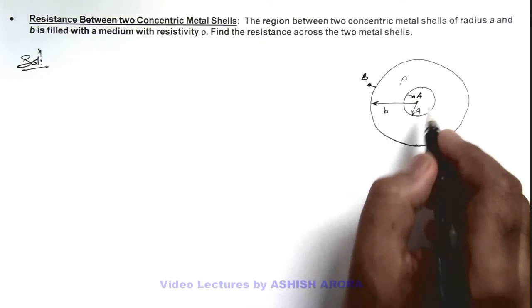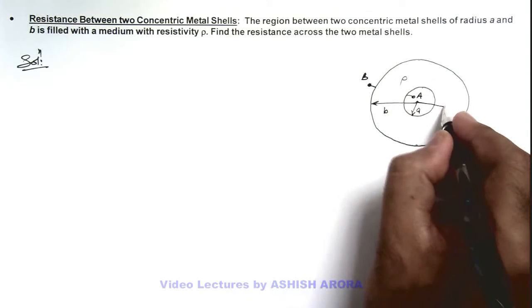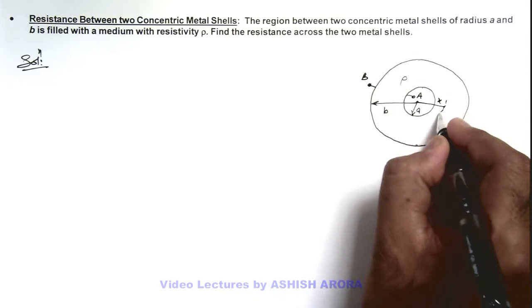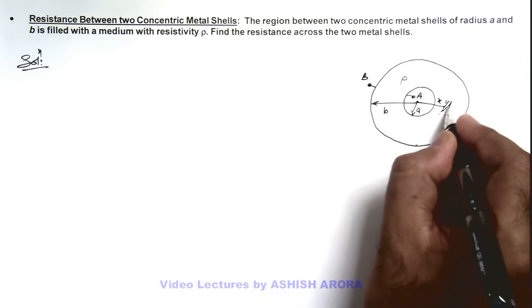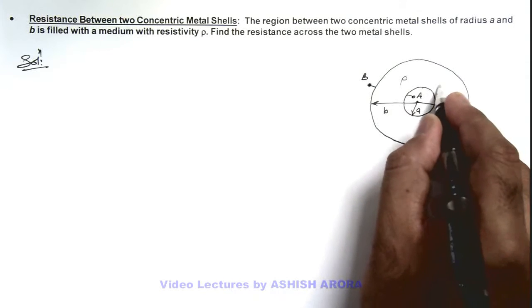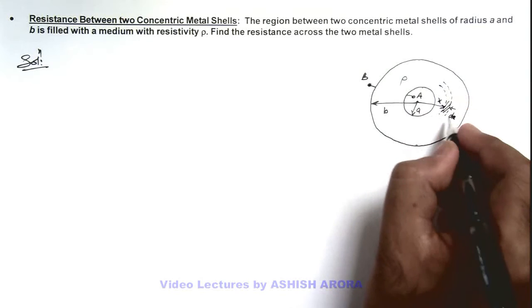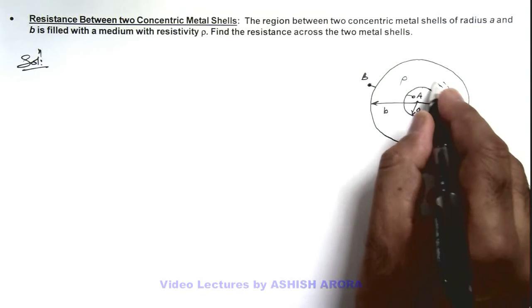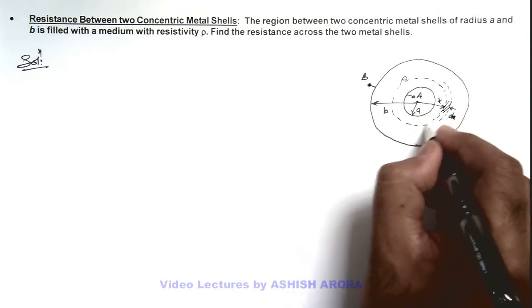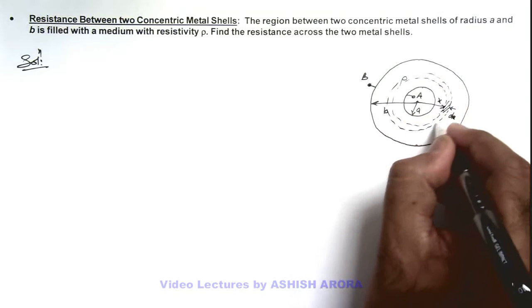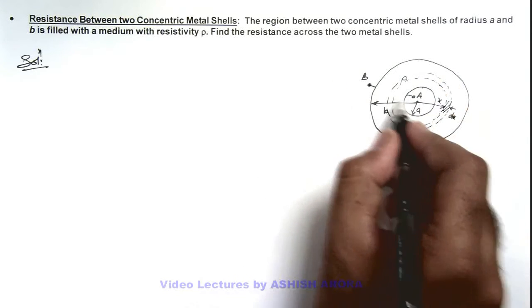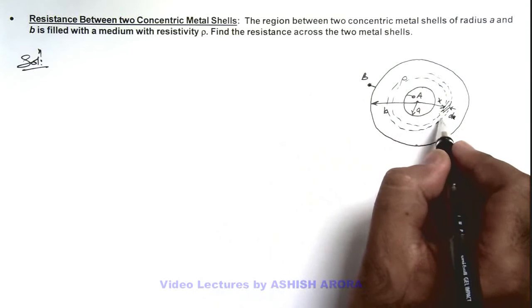So in this situation we can consider a small elemental shell of width dx, and this shell is considered to be of radius x. Here imagine a complete shell over here, and when current flows from a to b it also passes through this elemental shell.